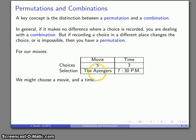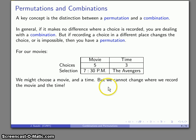Once I've chosen and made my selection and placed it in a spot, there's only one place that selection can go. It doesn't make sense if I switch them. There is no movie called 7:30 p.m., and certainly if I try to see the movie 7:30 p.m. at the time The Avengers, I can't do that. That selection doesn't make any sense.